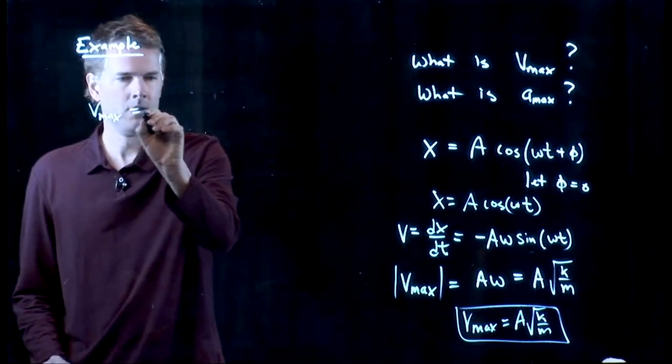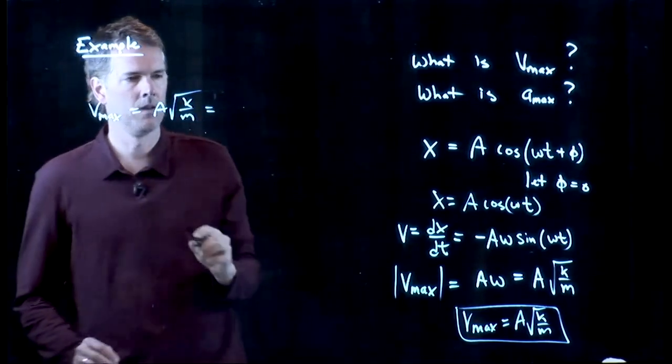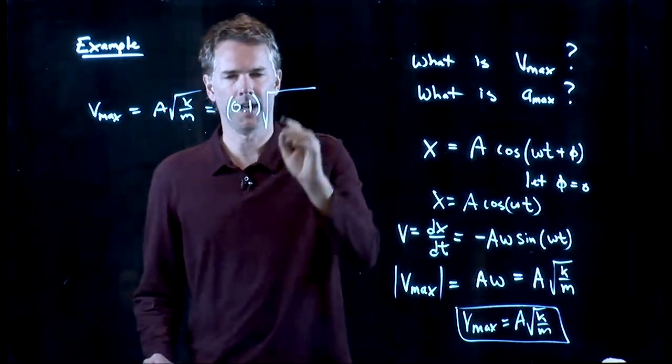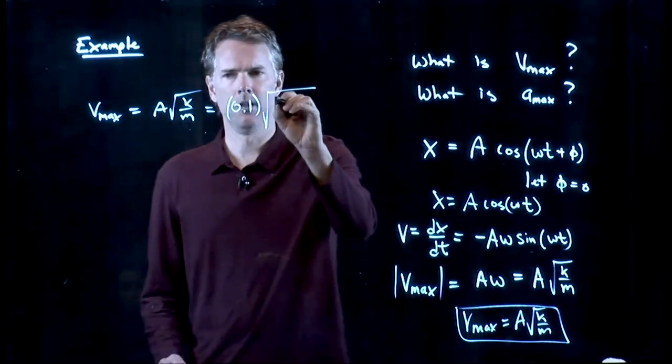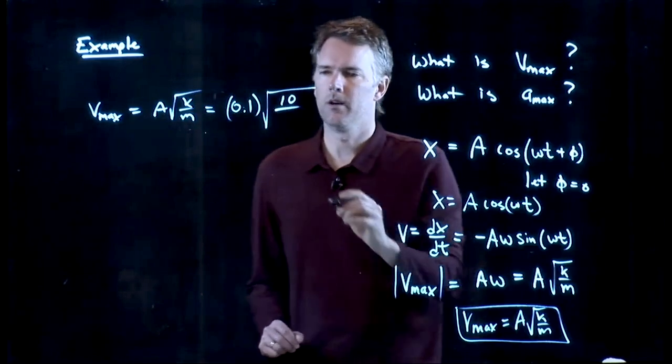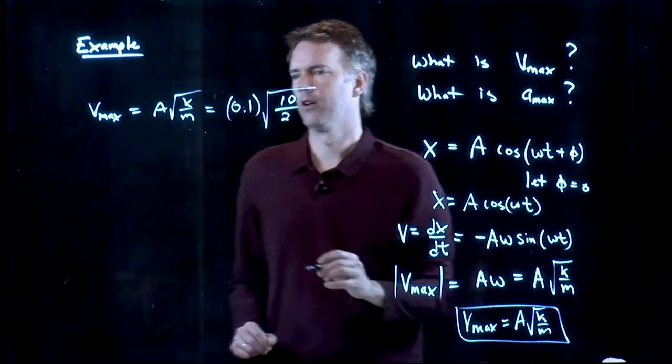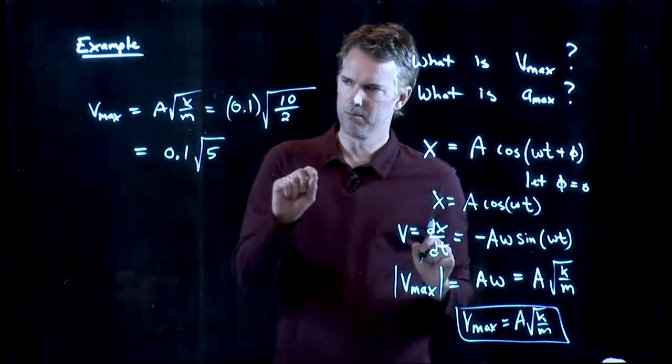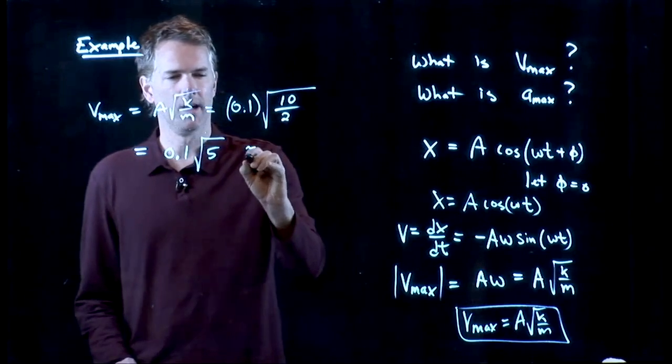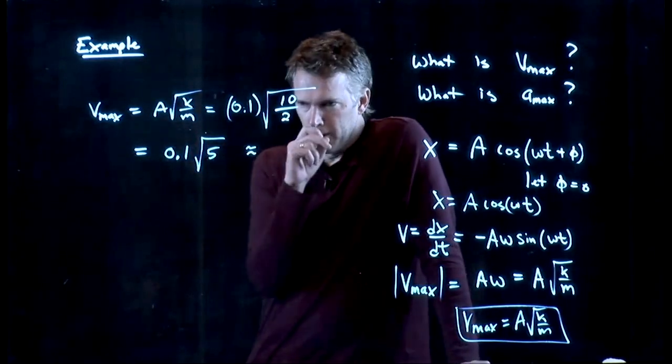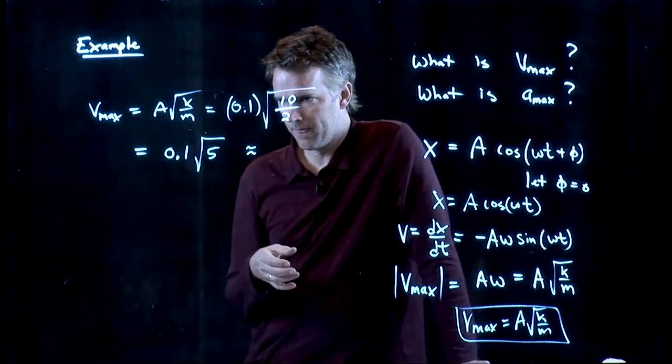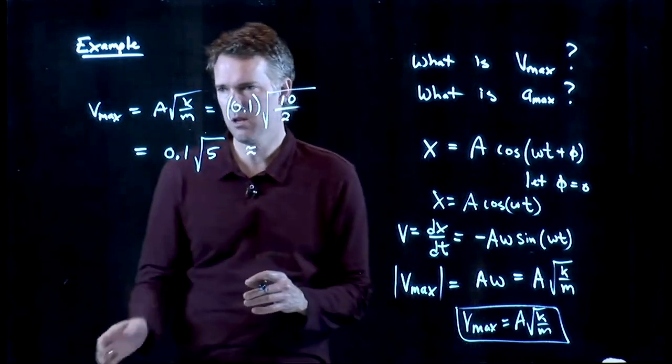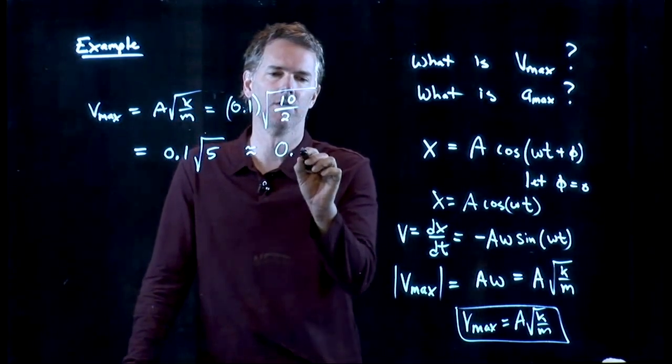V max is A square root of k over m. What did we say A was? 10 centimeters, right? SI units, that's 0.1. What was our k? 10 newtons per meter. We had a mass of 2 kilograms. And so now you can punch this in and see what you get. 0.1 times the square root of 5. If one of you, punch that into your calculator, tell me what you get. And we'll approximate it right here. What's the square root of 5? Well, the square root of 4 is 2. And we got to get a little bit more than that. So maybe 2.3. And then I'm going to take a tenth of that. So I'm going to say this is 0.23.